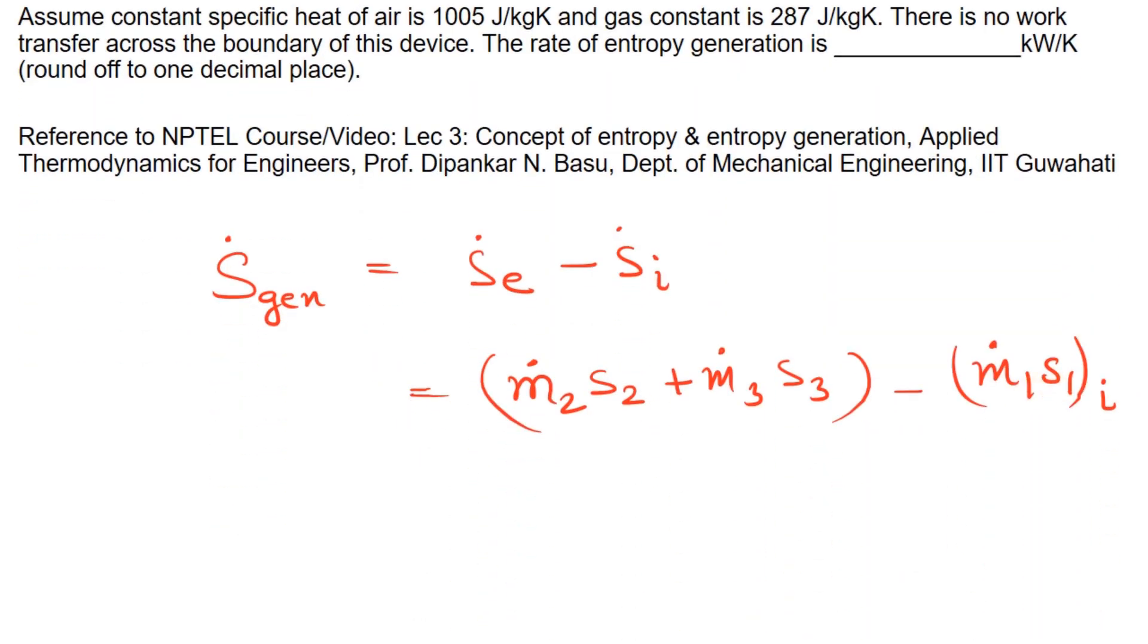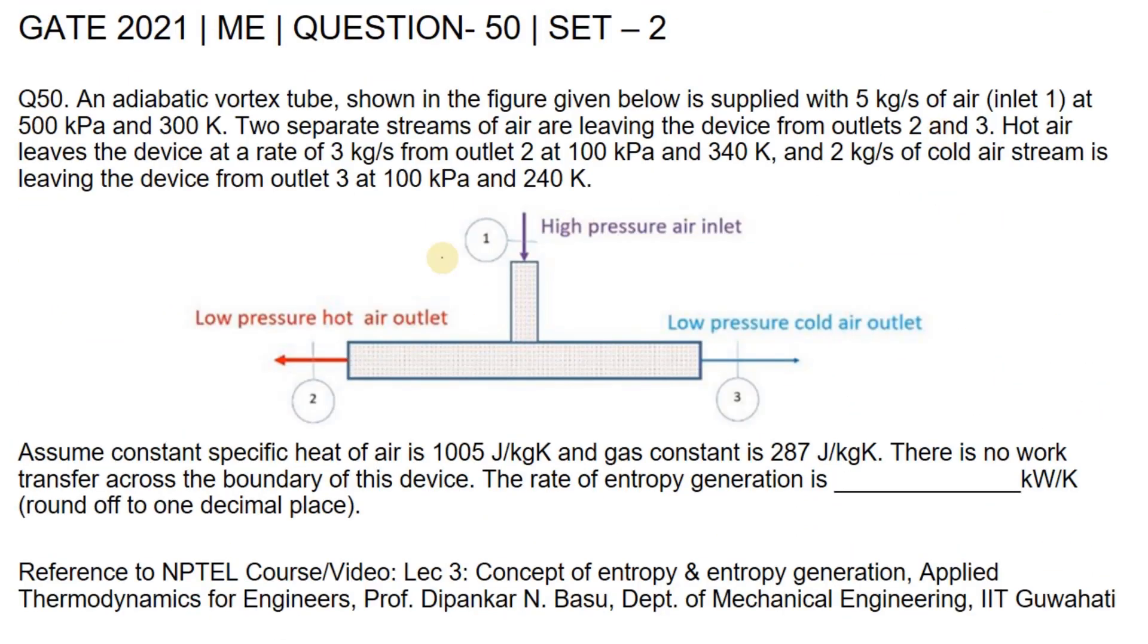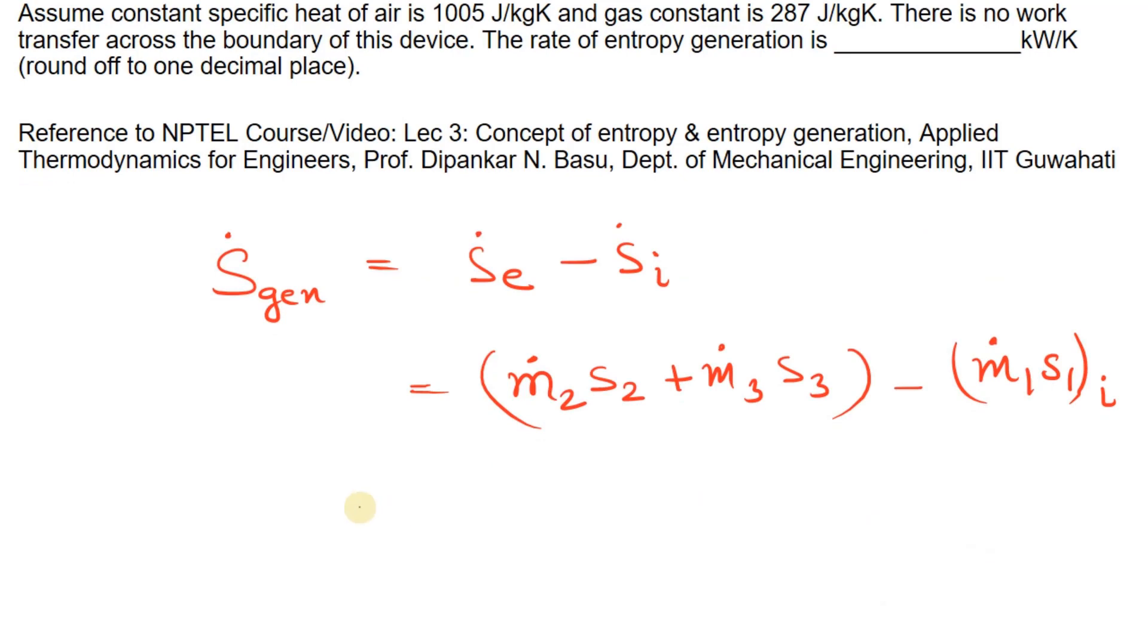We also know that whatever mass enters the vortex tube must exit, so m1 should equal m2 plus m3. The mass flow rate at 1 equals mass flow rate at 2 plus mass flow rate at 3.